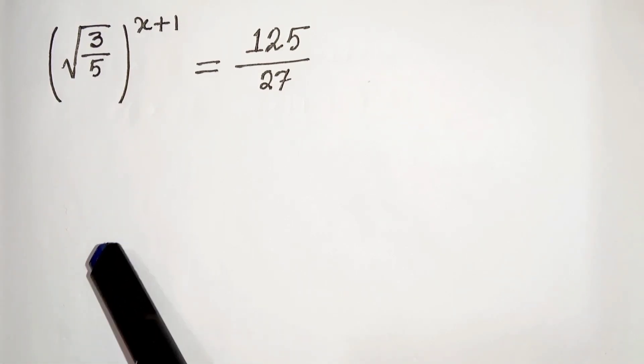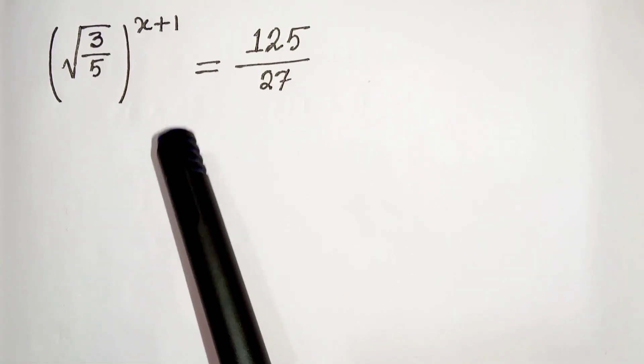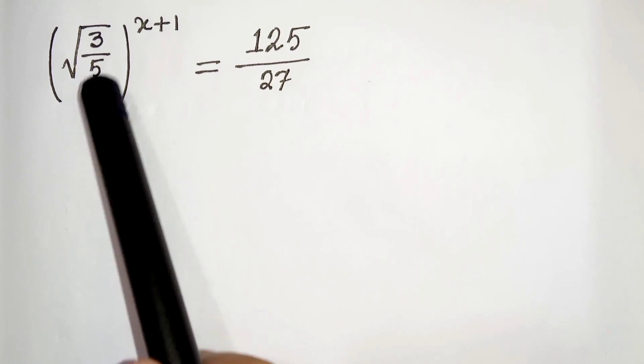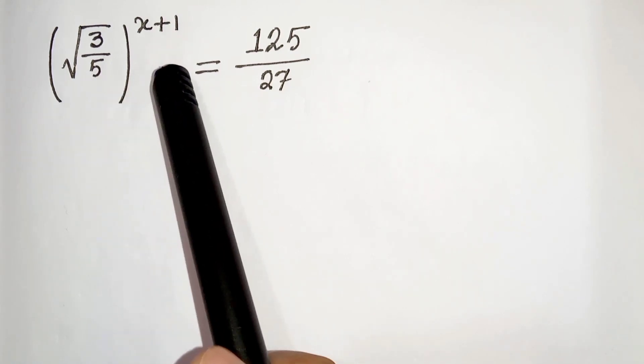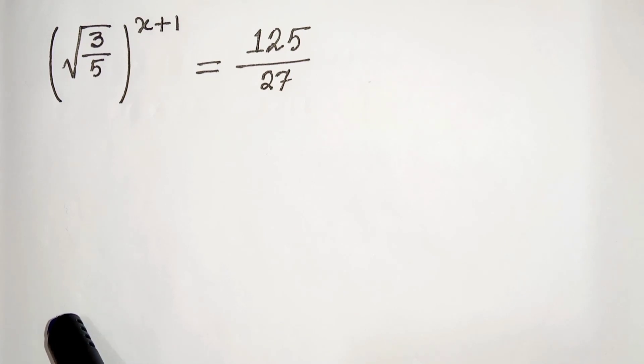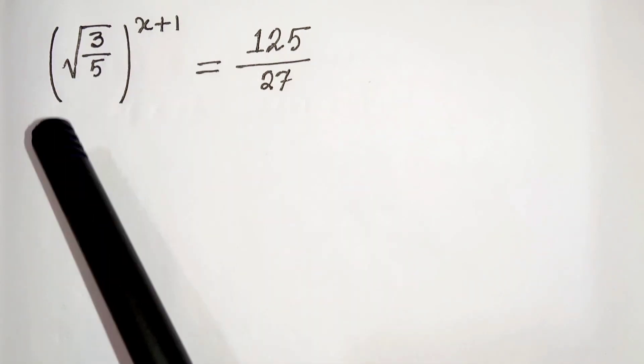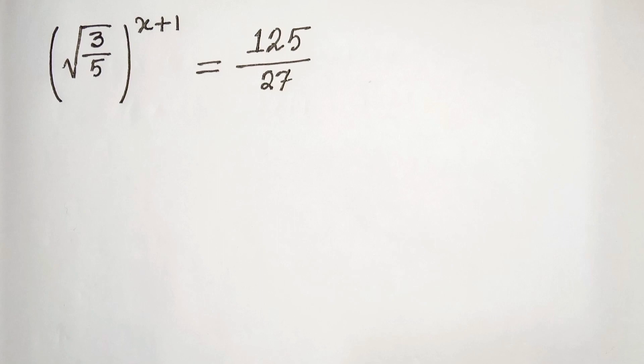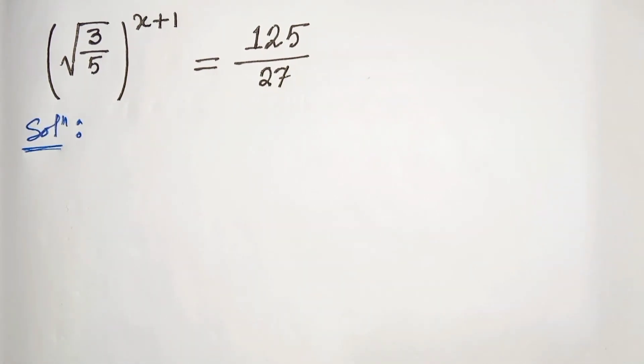Hello everyone, in this video we have this problem from indices. We have root 3 by 5 whole to the power x plus 1 equals 125 divided by 27. We have to solve this and find the value of x, so let's start.